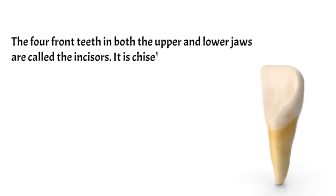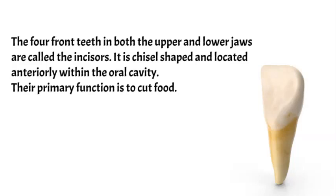The four front teeth in both the upper and lower jaws are called the incisors. They are chisel-shaped and located anteriorly within the oral cavity. Their primary function is to cut food.